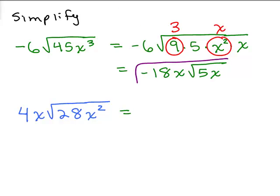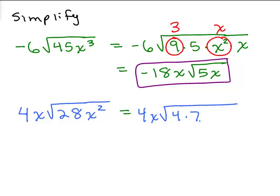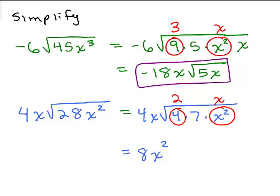For the second problem, break 28 into 4 times 7 because 4 is the perfect square, and x squared is already a perfect square. Take out a 2 from the square root of 4 and an x from the square root of x squared. Multiply 2x times 4x to get 8x squared out in front, times the square root of 7.